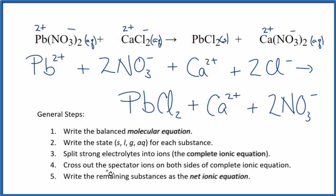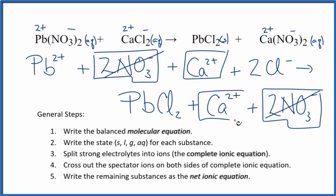Now we're going to cross out spectator ions. They're on both sides of the complete ionic equation. We have our reactants and our products. So here are those two nitrate ions we saw before and in the products here. These are spectator ions, so we can cross those out. In the reactants here, we have the calcium ion and in the products. So we can cross these out. They're spectator ions as well.